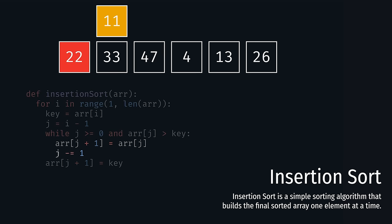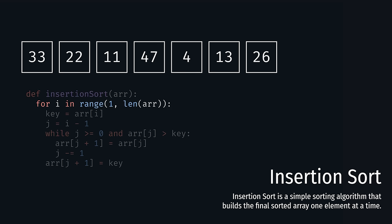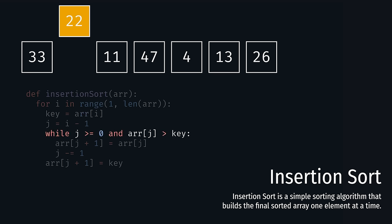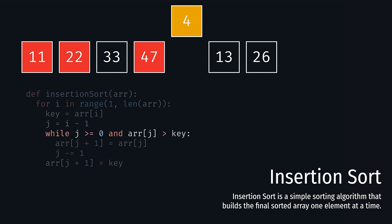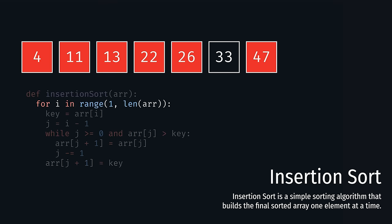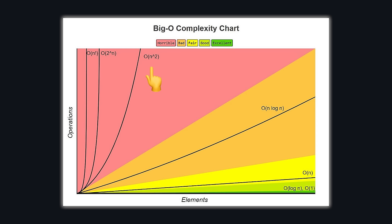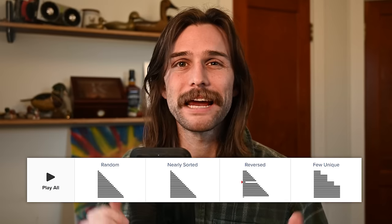Insertion Sort is a little bit better — most of the time. Insertion Sort is a simple sorting algorithm that builds the final sorted array one element at a time. The for loop sequentially selects each element of the array starting at index 1. For each selected element, which is key, the while loop compares it with the elements in the sorted section. While key is smaller than the sorted elements, those elements are shifted right to make space until the correct position for key is found, where it is then inserted. Like Bubble Sort, it has an average and worst-case time complexity of O(n²). However, its best-case time complexity is O(n), making it a fine choice when the data set is nearly sorted, but a poor choice when the data set is reversed.